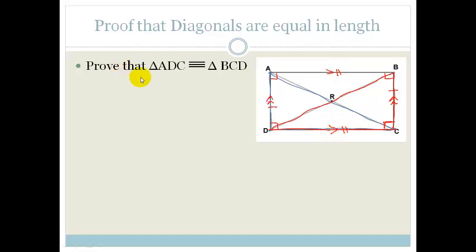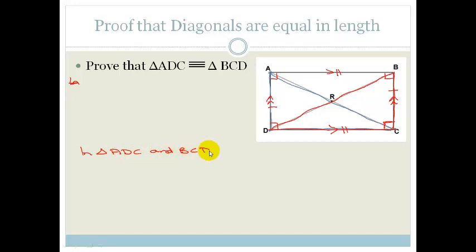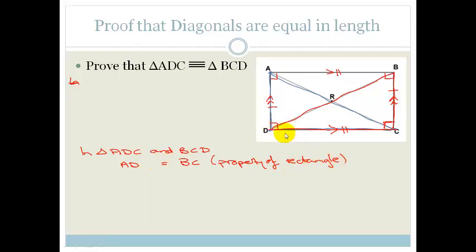In triangle ADC and triangle BCD, do you agree that AD is equal to BC? This is a property of a parallelogram as well as a rectangle. So we can state: length AD equals length BC — because this is a property of a rectangle or parallelogram. We also know that DC is common in both triangles, so DC equals DC because it is common to both.